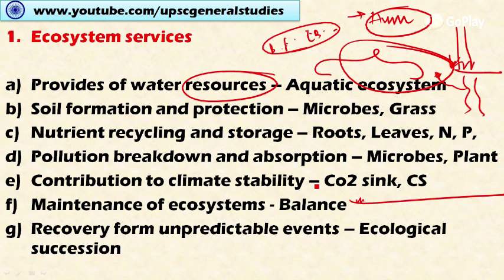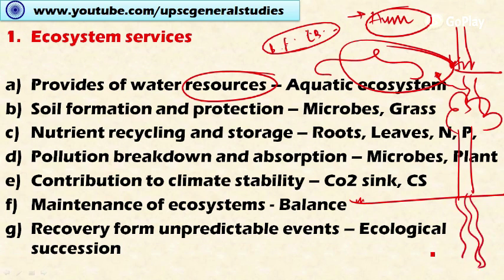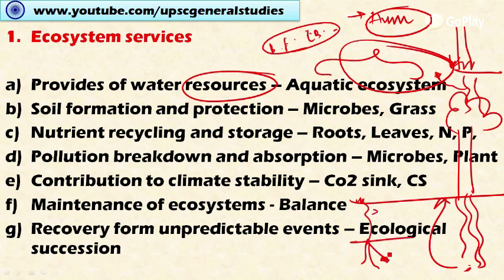The third ecological function is nutrient recycling and storage. Tall trees have deeper root systems which help in recycling nutrients present in deeper layers of the earth, bringing them to the top layer through absorption. Leguminous plants have root nodules containing Rhizobium bacteria, which absorb and fix atmospheric nitrogen, helping biodiversity contribute to nutrient cycling and storage.